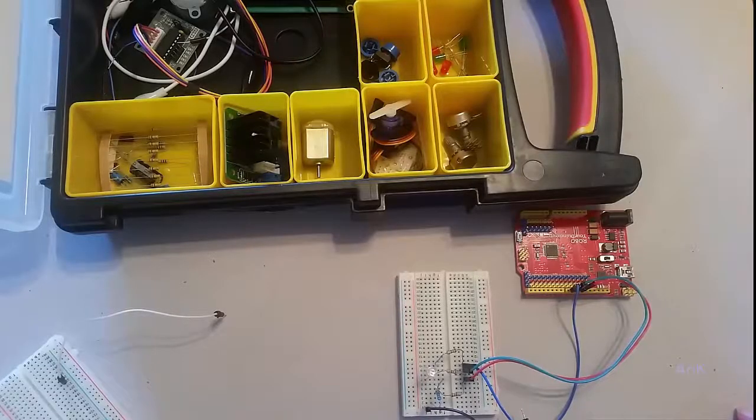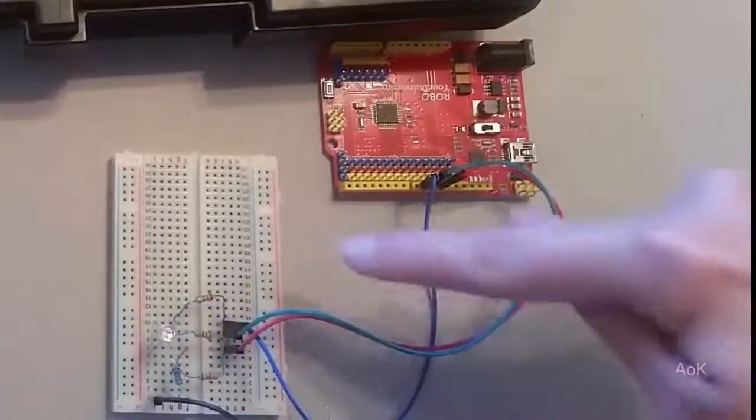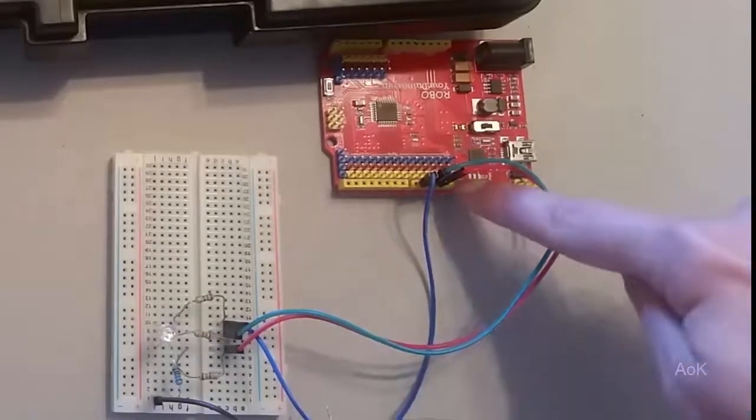Here you can see this breadboard contains several components, including resistors, LEDs, and male wires. The male wires are plugged in directly to the Arduino board.